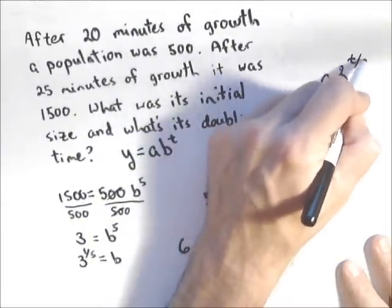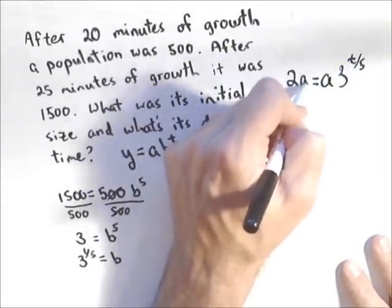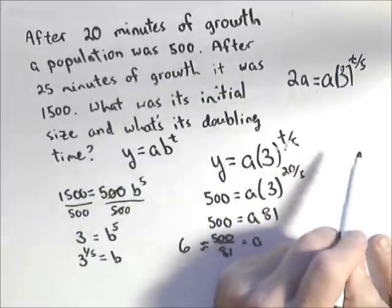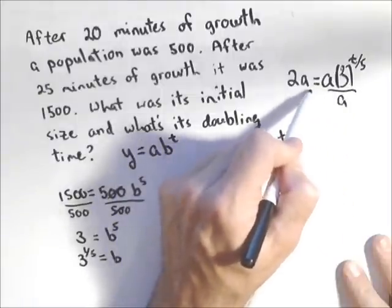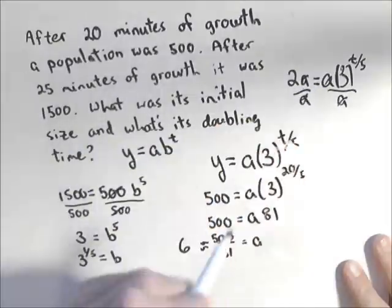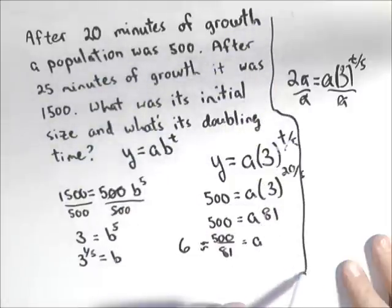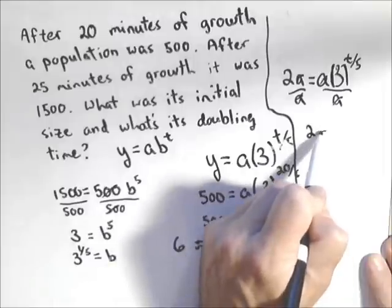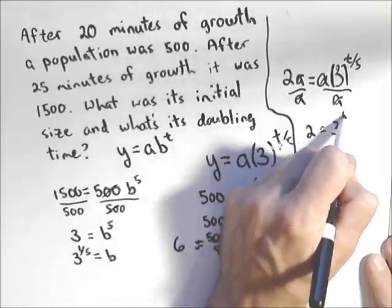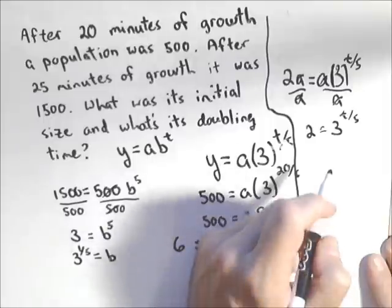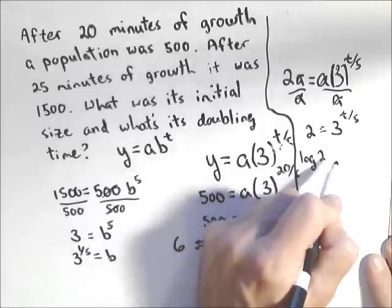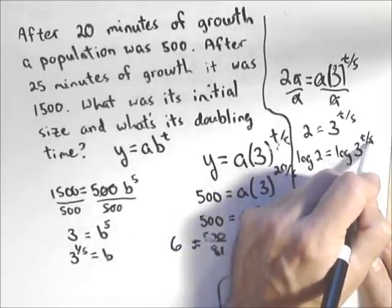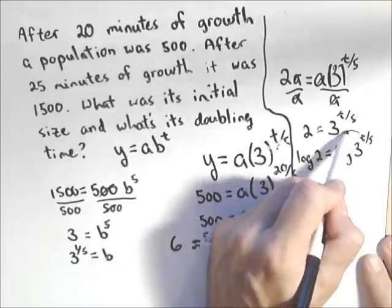I want to find when my initial value of a times three to the t over five is going to be equal to two a. I'm going to put that three in parentheses. We can divide both sides by a, and those cancel. Sorry, I'm running out of room here. What I'm going to have is that two equals three to the t over five. Now we'll take log or natural log of both sides.